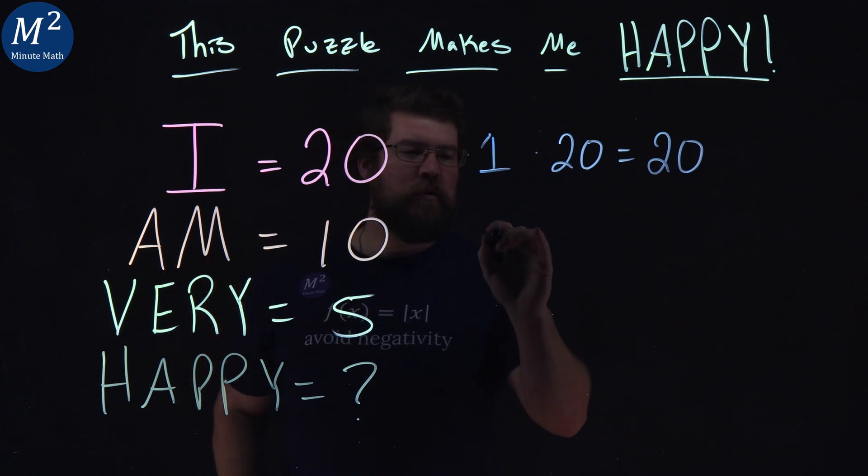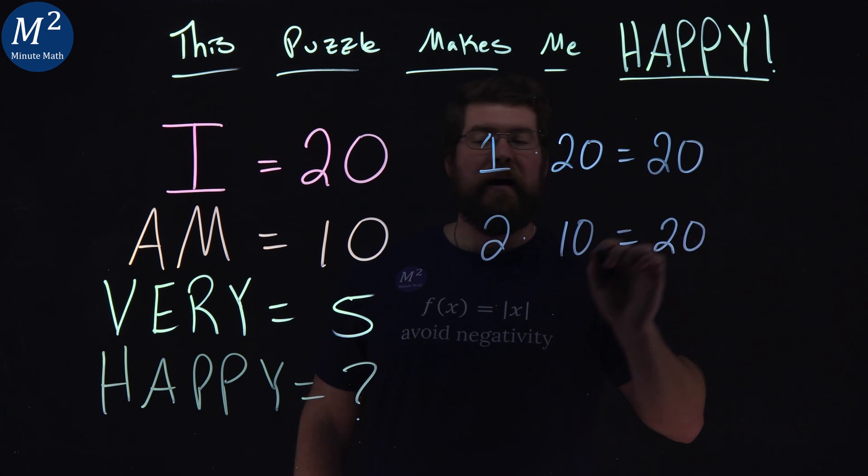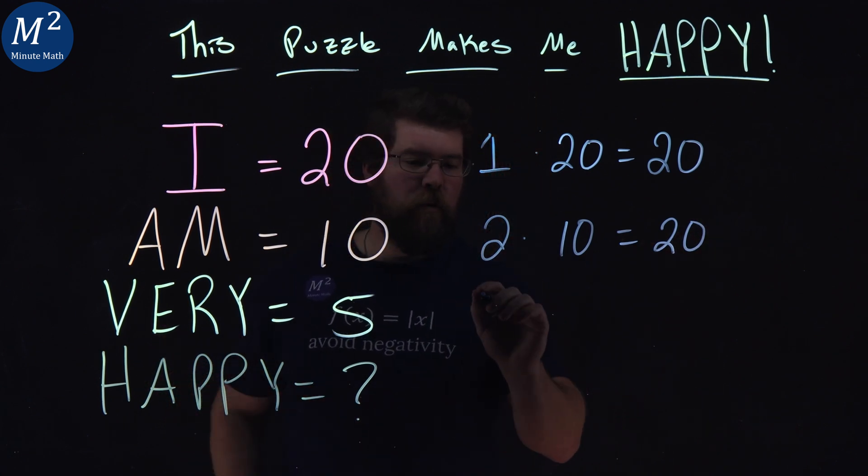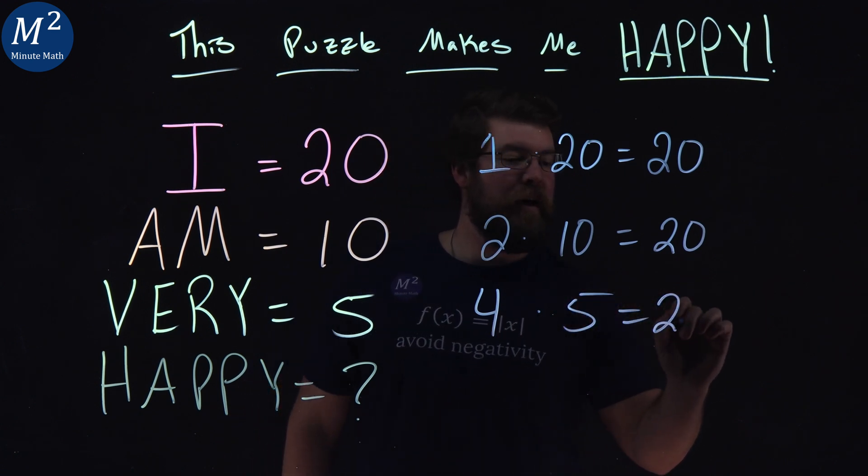Am has two letters in it. Two times 10 gives me 20. Very, V-E-R-Y, has four letters in it. Four times 5 gives me 20.